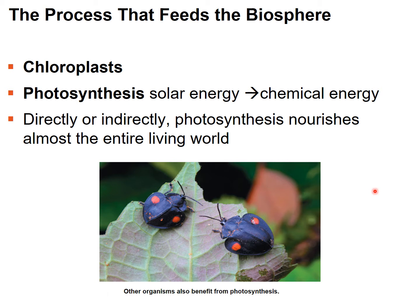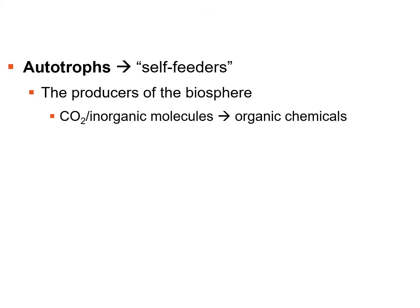A lot of organisms depend on photosynthesis, either directly or indirectly. Plants depend on it directly to create sugars they use for building materials and energy. Indirectly, organisms like beetles depend on photosynthesis because they eat leaves — and inside the leaves are the sugars the plant produced. So there are organisms that actually eat the sugars produced by photosynthesis.